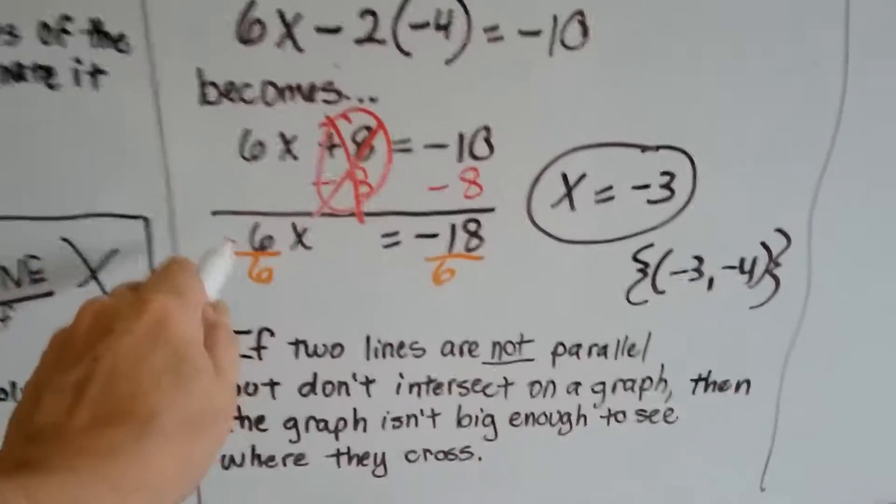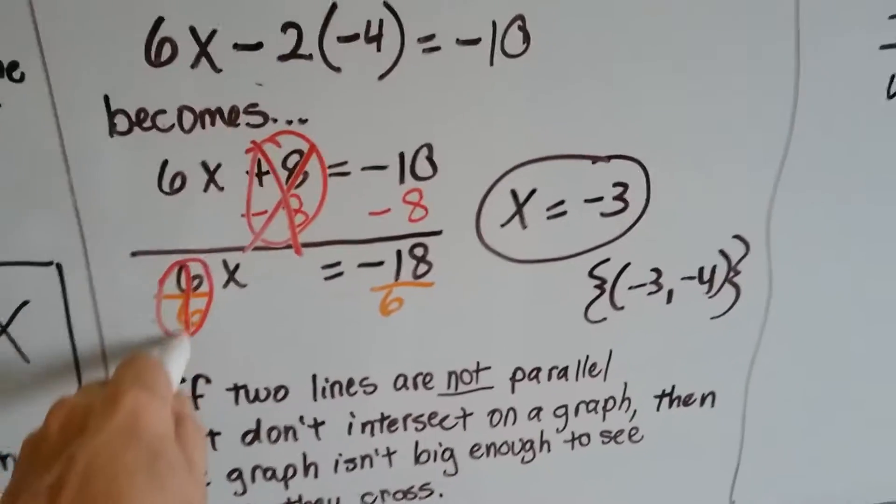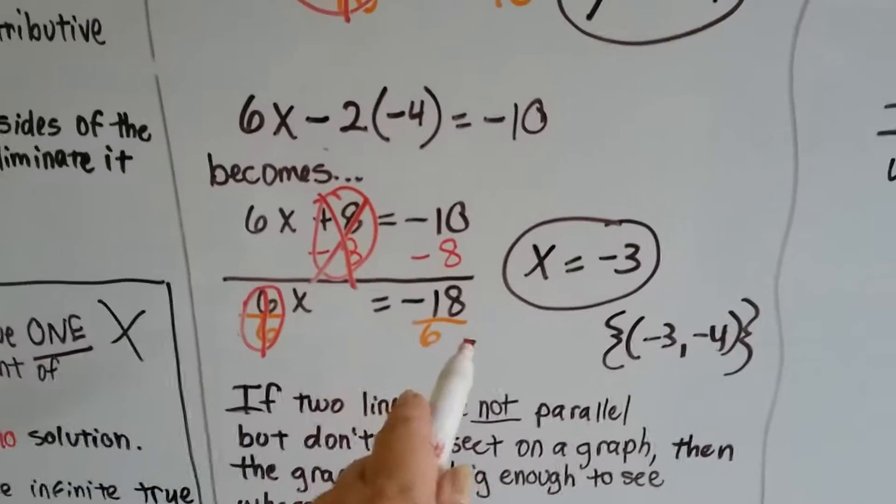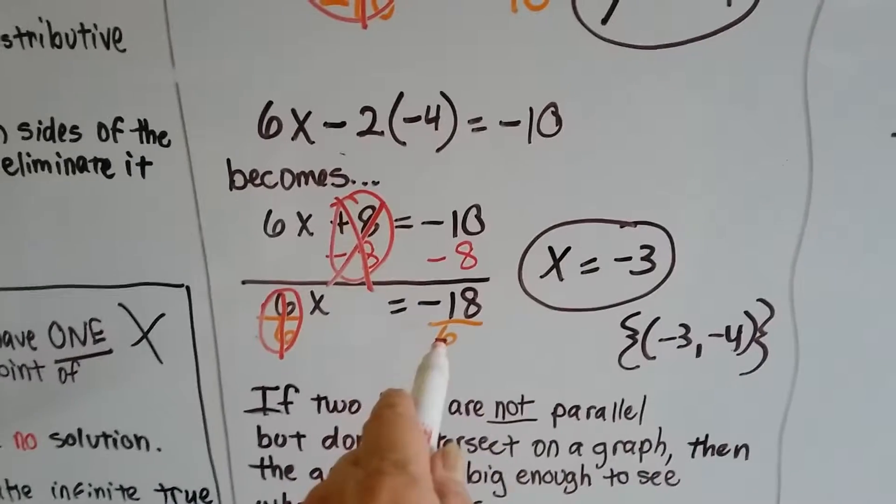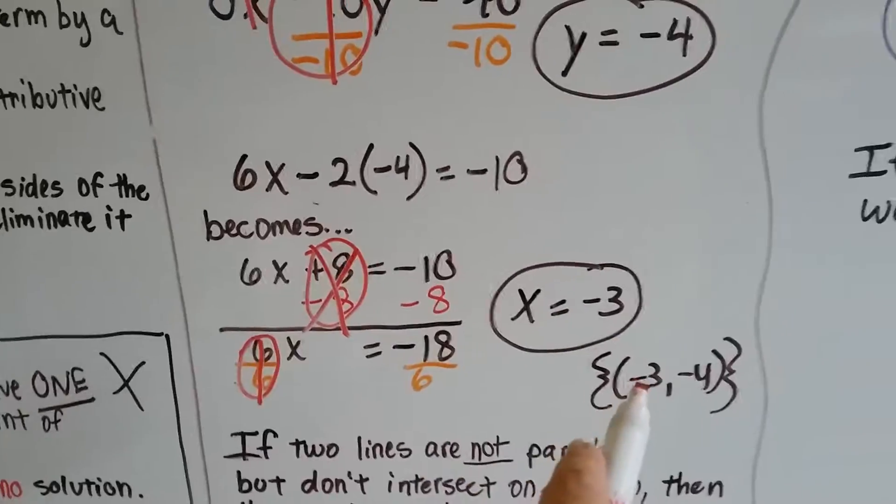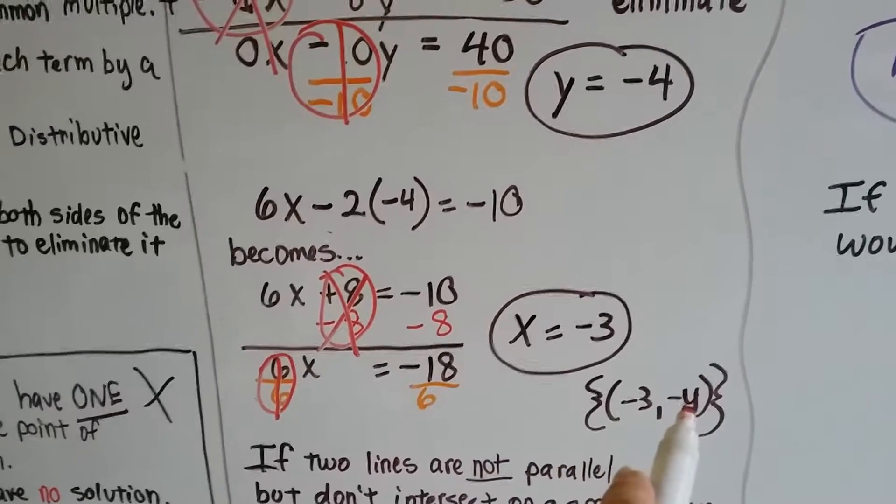That gives us our invisible one again. x = -3 because 18 divided by 6 is negative 3. That's our solution set: (-3, -4).